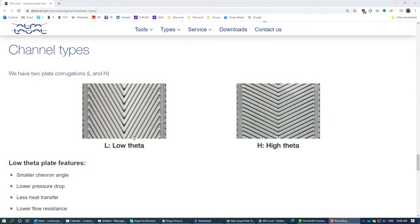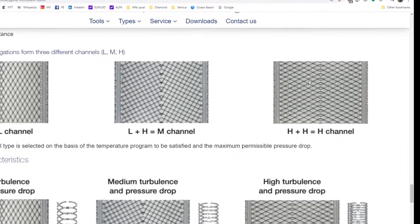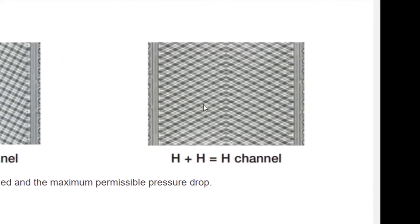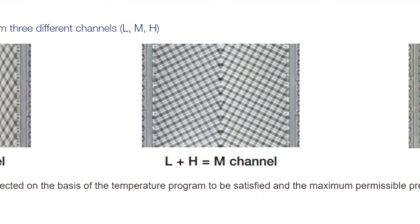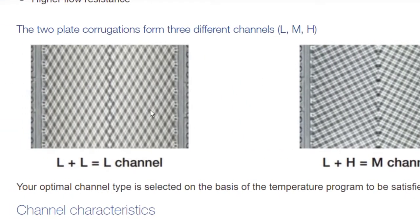The heat transfer area of a plate can have many patterns pressed into its surface depending on the duty. However, the most common type is the chevron pattern. There are two commonly used chevron angles which are referred to as high or low theta. Theta refers to the openness of this angle. A wide angle plate is a high theta plate, whereas a low angle plate is a low theta plate. When two high theta plates are placed together, more contacts are formed in the channel than when two low theta plates are placed together.